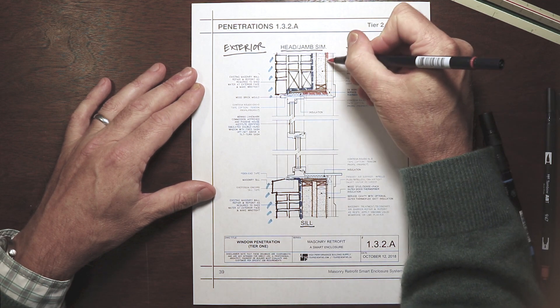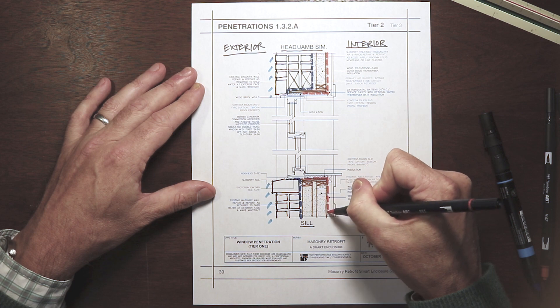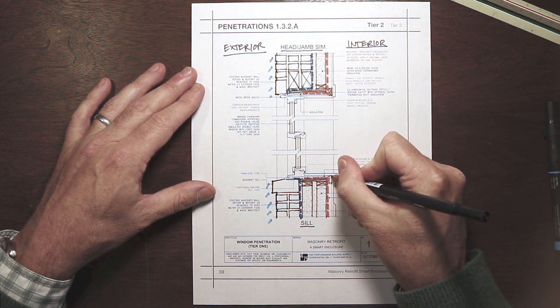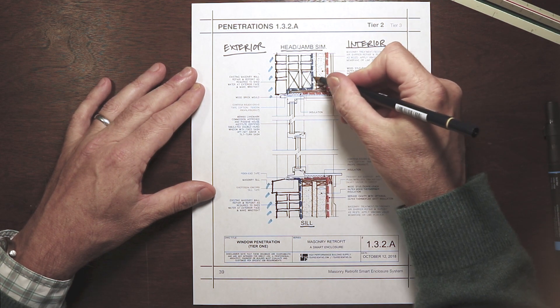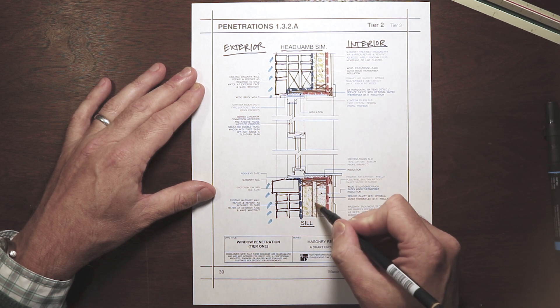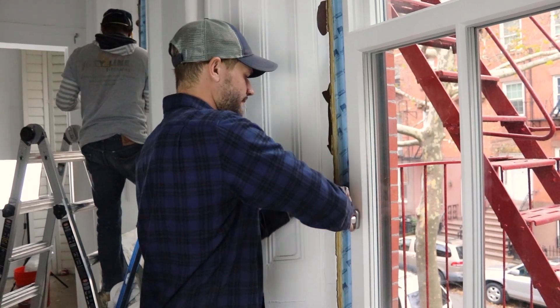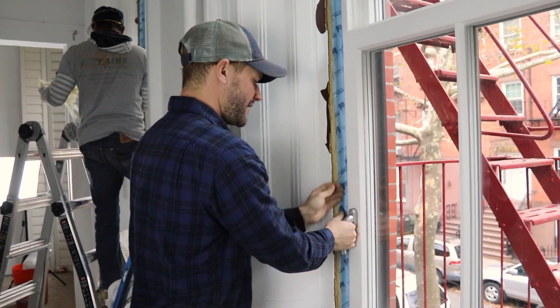Next, install the primary air barrier and smart vapor retarder, Intello Plus or DB Plus on the framing, and then the battens forming a service cavity. The dense pack wood thermofiber or cellulose insulation can be installed before or after the windows. The windows themselves should be high performance, windows that are truly airtight and thermally broken.